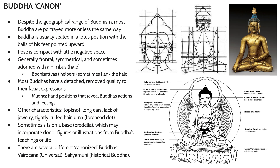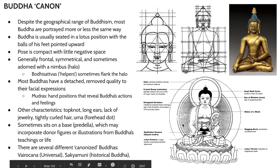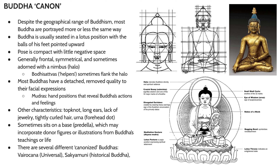In terms of Buddha canon, despite the geographical range of Buddhism, the figure of the Buddha remains quite recognizable. You probably were able to recognize a Buddha even before taking this class. Usually Buddhas are seated in a lotus position with the legs crossed, crisscross applesauce, usually with the balls of the feet pointed upward. Generally, the poses of Buddhas are very frontal — there's not really much contrapposto.